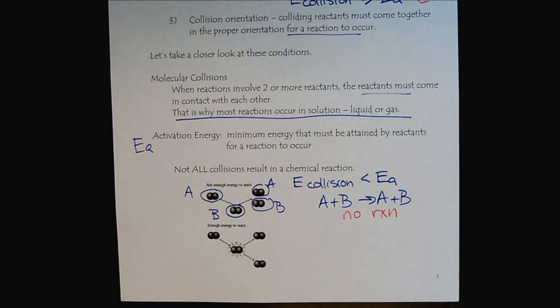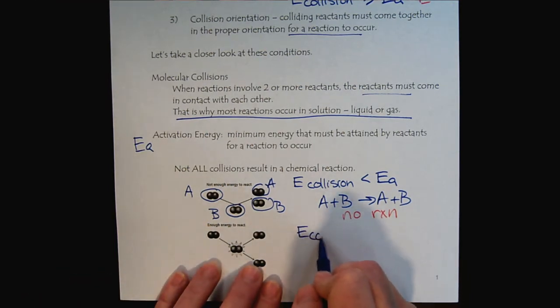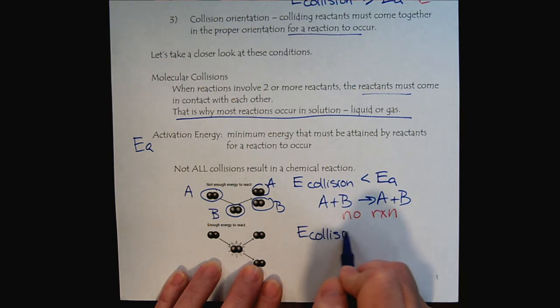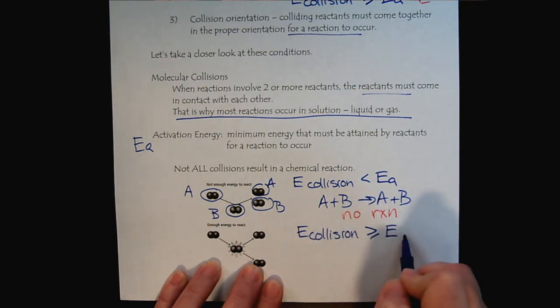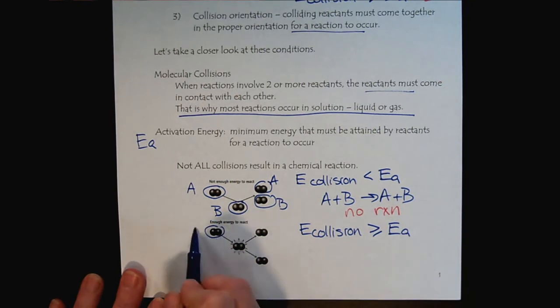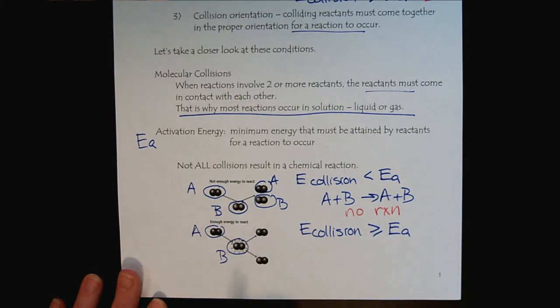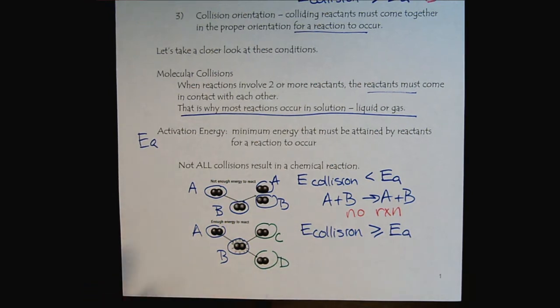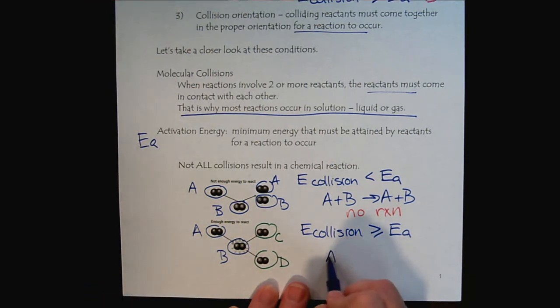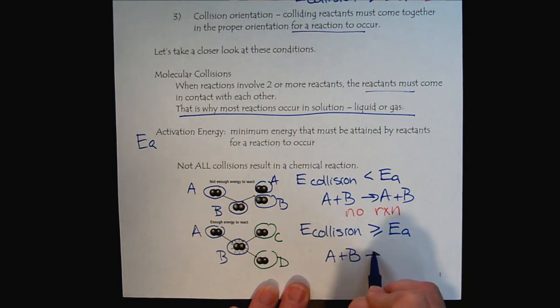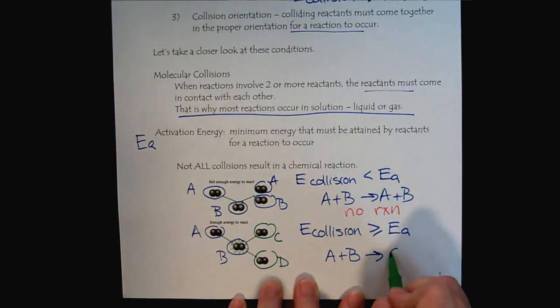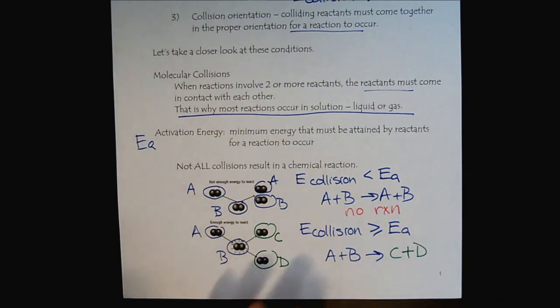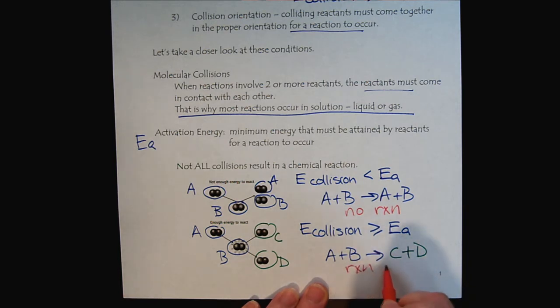On the other hand though, if the collision energy is greater than or equal to the activation energy, then we have our same original A and B. However, we will produce two new substances, C and D. So if we wrote this as a reaction, now we would say that A plus B produce new substances. So this would be a successful reaction.